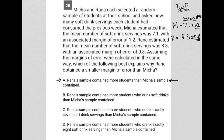Choice B: Rana's sample contained more students who drink soft drinks than Misha's sample contained. That shouldn't affect the margin of error — that would actually affect the whole experiment. If it wasn't really random and Rana ended up talking to students who were more likely to drink soft drinks, that would impact the entire experiment but wouldn't necessarily impact just the margin of error alone. So I'm going to get rid of Choice B. Choice C: Rana's sample contained more students who drank exactly seven soft drink servings — that's too specific. This is supposed to be very randomized, and Choice C has nothing to do with margin of error. Choices B and C, for the same reasons, are not good because they completely eliminate the idea of a random sample.